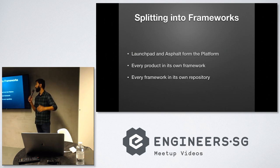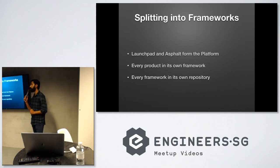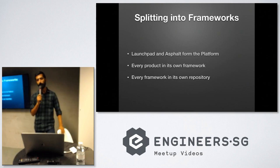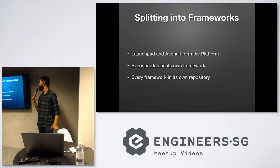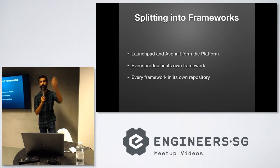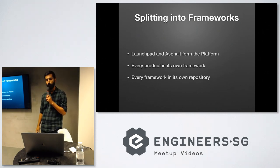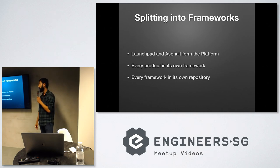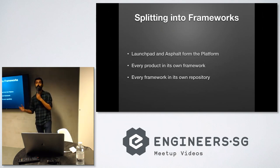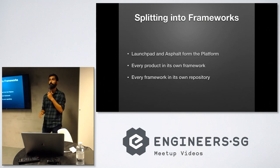The first step was splitting everything into multiple frameworks. At the platform level, we have a new framework called Launchpad, which is basically the brains of our app, and another helper framework called Asphalt, which implements our design language system. Launchpad is more like Foundation, and Asphalt is more like UIKit for you. After that, we moved every product into its own framework and every framework into its own repository. The moment we did that, we eliminated all merge conflicts, because the number of people committing to a single repository dropped significantly.